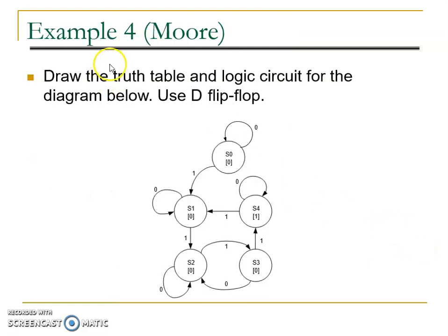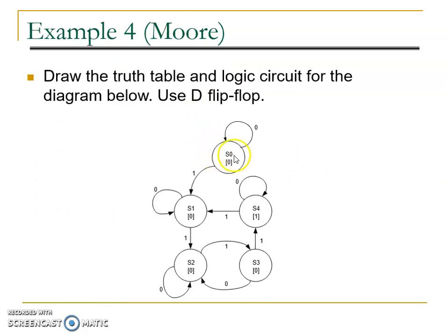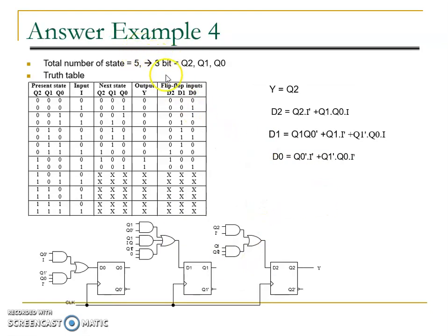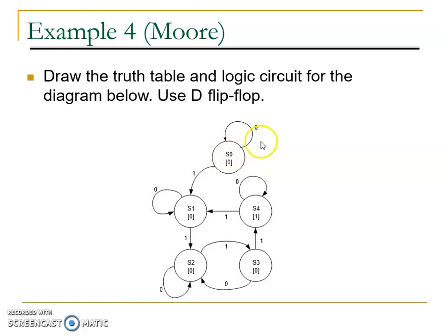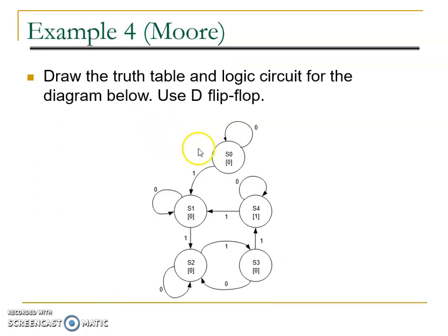Next is Example 4: draw the truth table and logic circuit for the diagram below using D flip-flop. The total number of states is 5: S0, S1, S2, S3, and S4. This means we need to use 3 bits: Q2, Q1, and Q0. The present state and next state each use 3 bits, and both the input and output are 1-bit.